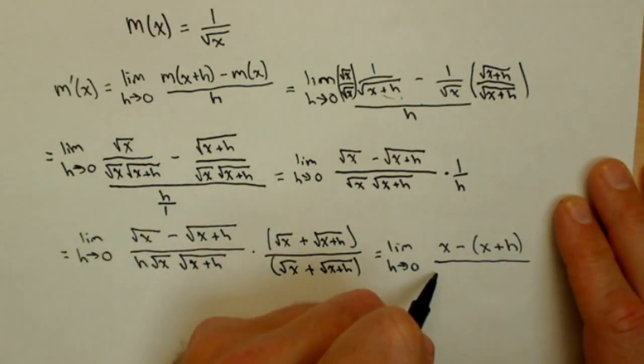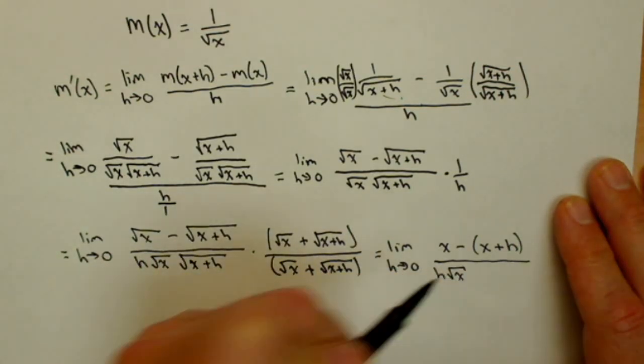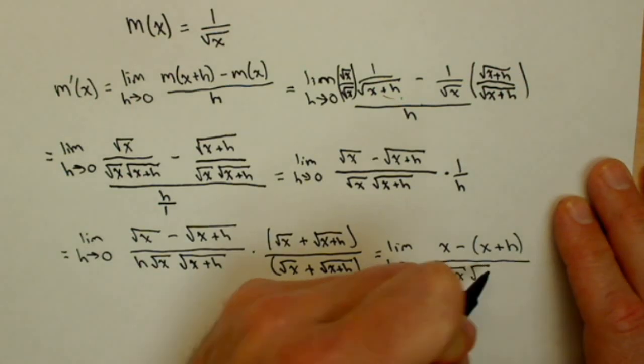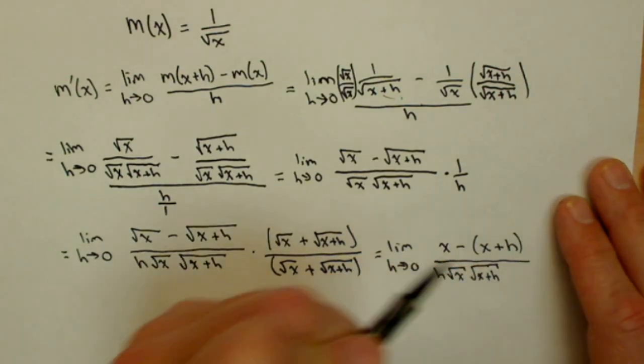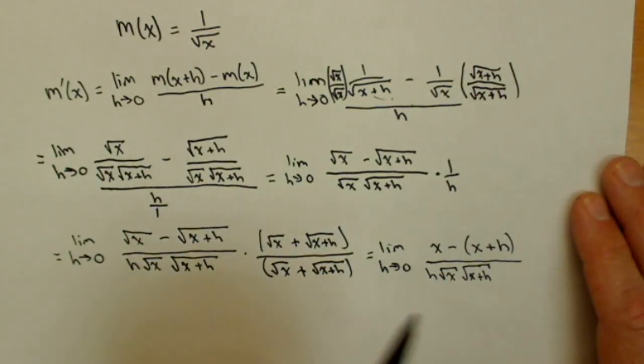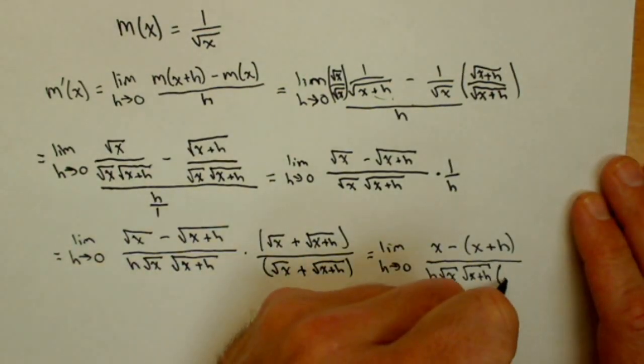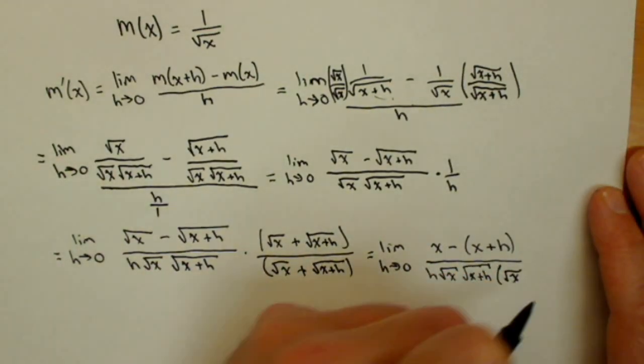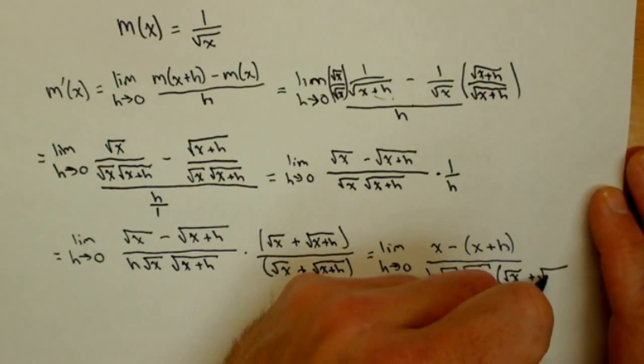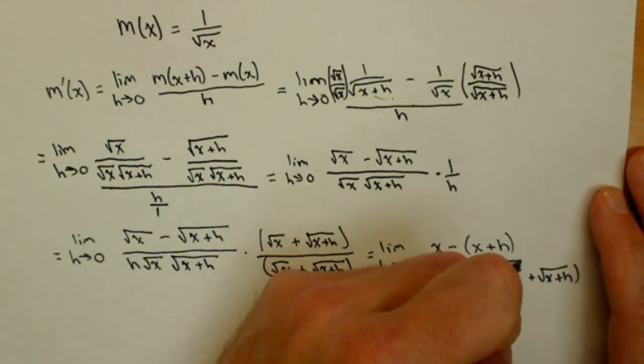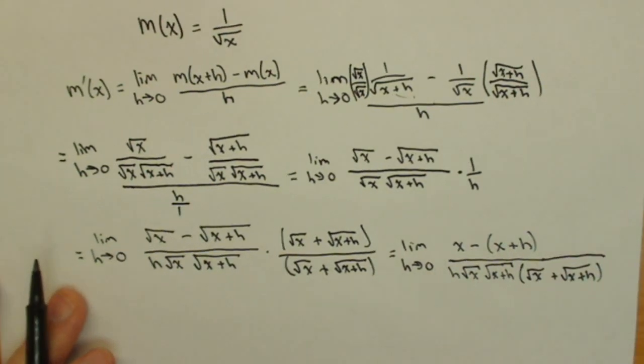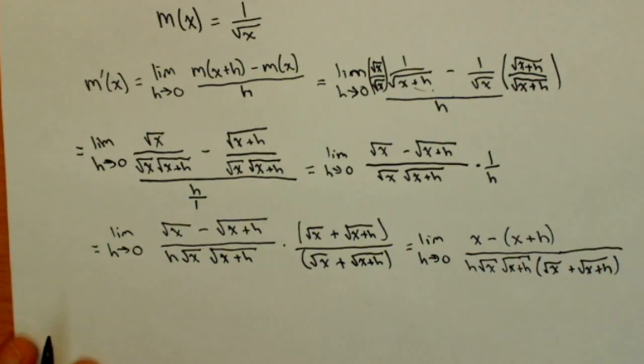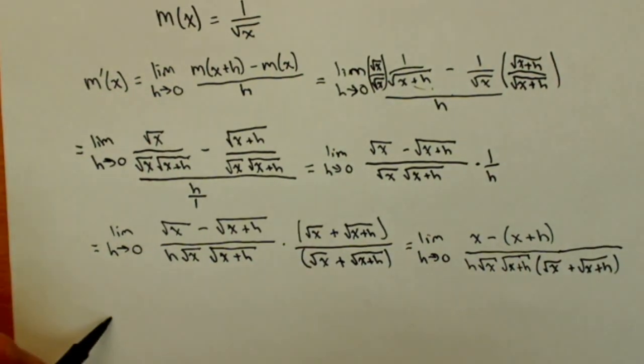All over h. Now, the denominator is going to look a little bit messy. Do not worry about multiplying it out at this point. Square root of x, square root of x plus h times square root of x plus square root of x plus h. It may be tempting to do that, but it's more work than you need to do at this point.